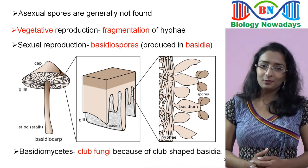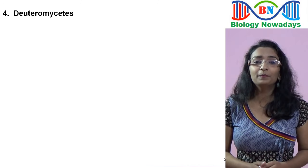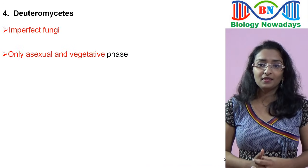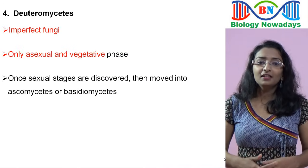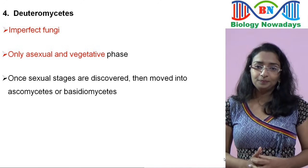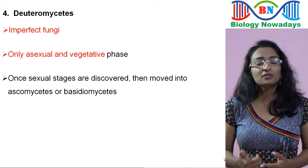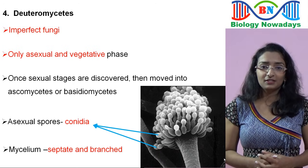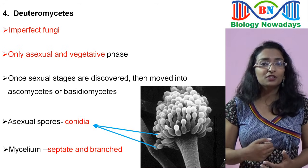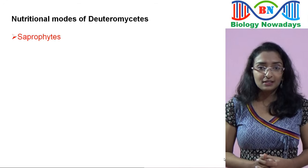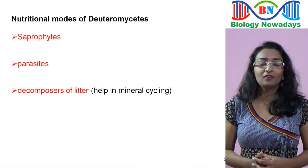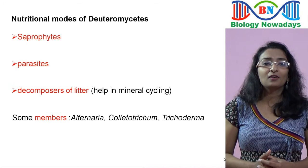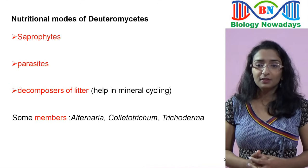Moving on to the last group, Deuteromycetes. They are called imperfect fungi because only the asexual and vegetative phase is known for these fungi. If sexual stages are discovered, they are moved into Ascomycetes or Basidiomycetes. They produce asexual spores called conidia. Their mycelium is septate and branched. Based on nutritional modes, Deuteromycetes can be divided into saprophytes, parasites, and decomposers of litter, helping in mineral recycling. Some members are Alternaria, Colletotrichum, and Trichoderma.